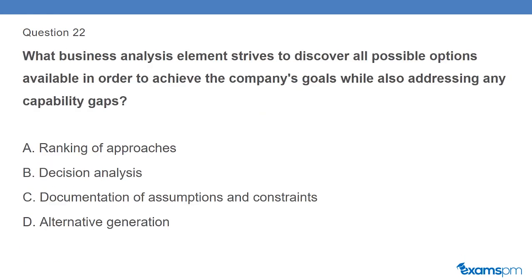Question 22: What business analysis element strives to discover all possible options available in order to achieve the company's goals while also addressing any capability gaps? A. Ranking of approaches. B. Decision analysis. C. Documentation of assumptions and constraints. D. Alternative generation.